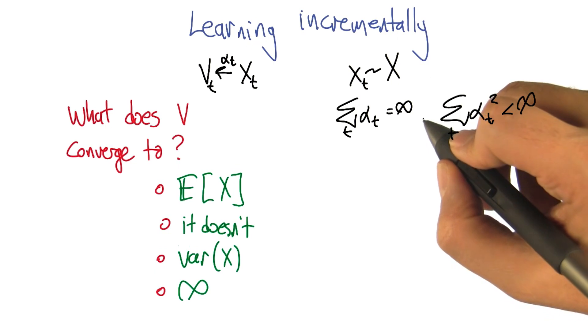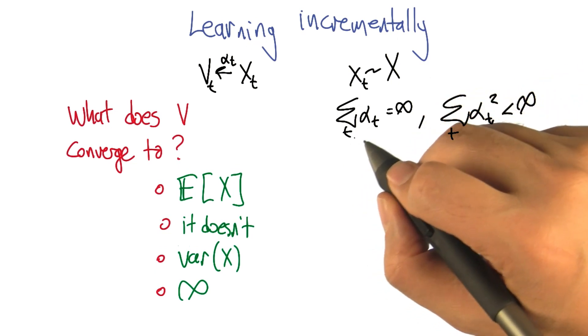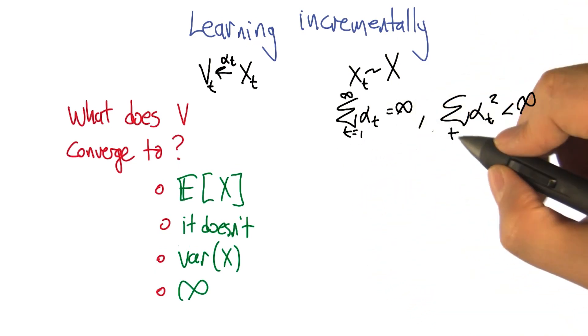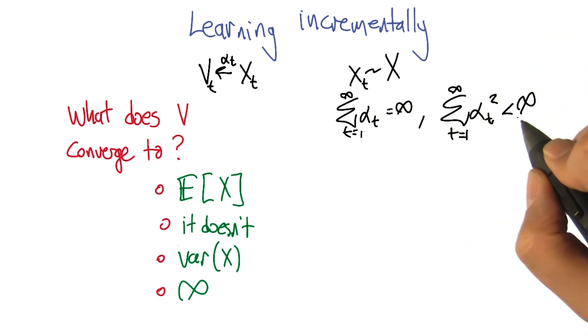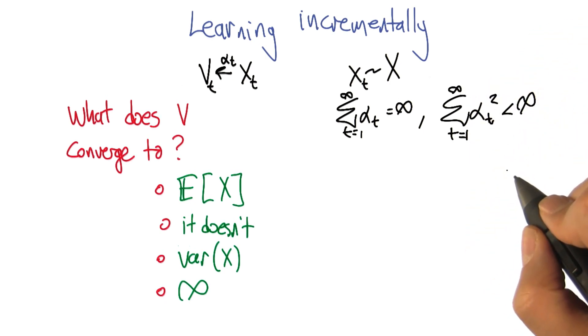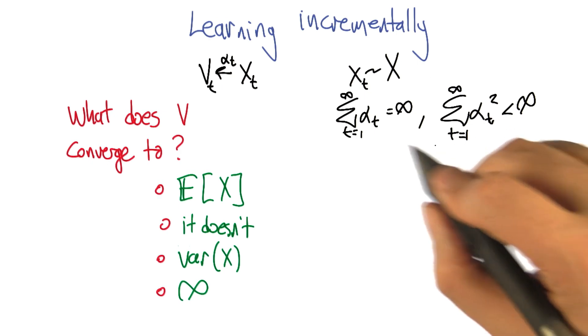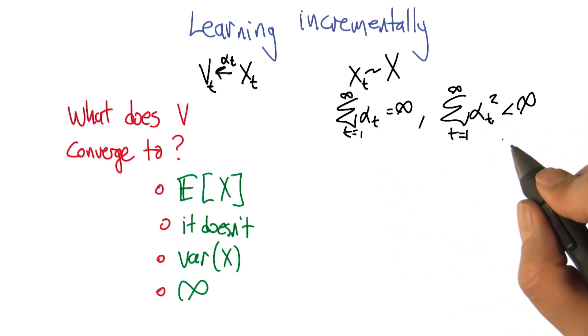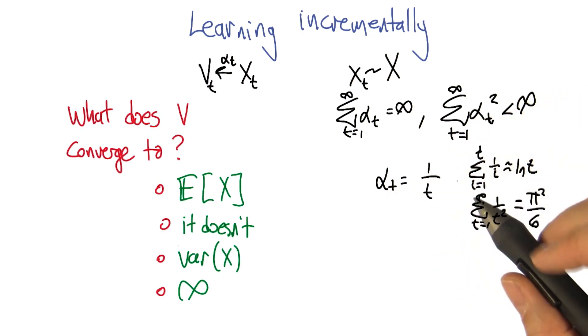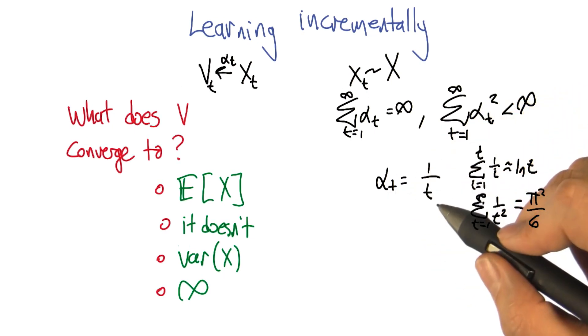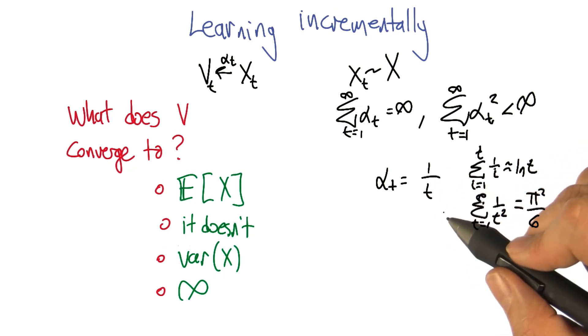And the learning rates are going to satisfy two properties. One is that the sum of the learning rates summed up to infinity, but the sum of the squares of the learning rate as we go to infinity sums up to something less than infinity. So can you think of a learning rate sequence that has that property? So the one that I remember is alpha sub t equals 1 over t. Good. So in fact, there's a whole range of possible powers of t that work here, but 1 over t is a good one.